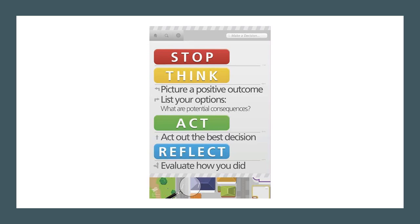The second step is to think. Ask yourself: is this decision going to help me be the healthy, happy, and confident person that I want to be? Think about what you would like to see happen as a result of your decision, and picture your best possible outcome. When you know what you want to happen, list your options and think about the positive and negative consequences of each option.